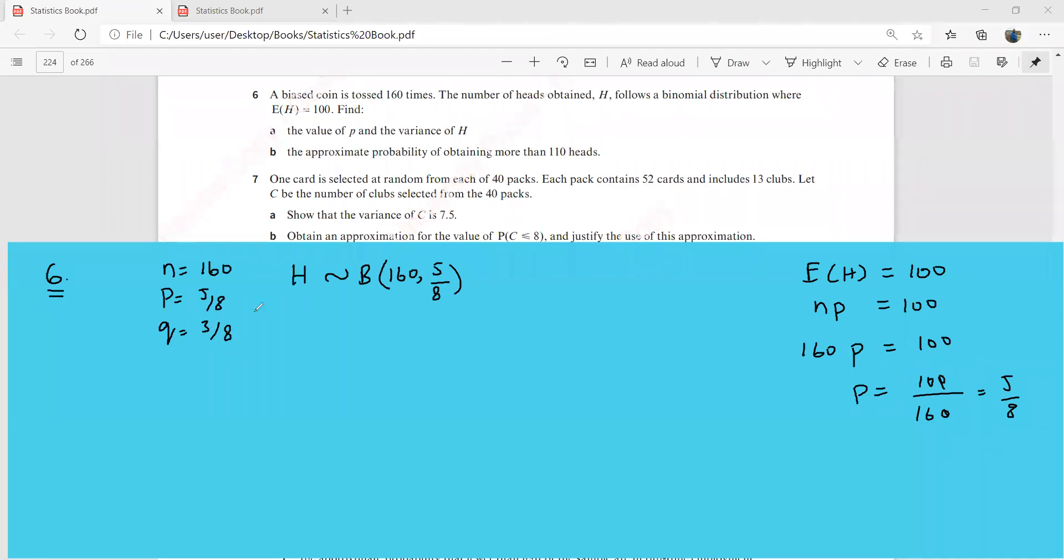It says find the approximate probability of obtaining more than 110 heads. So it's asking to find this probability that h is more than 110. Now you have to be very careful while writing this. You have to make sure that if there is an equal mark or not. Since it says more than 110, I'm just going to write more than 110. So we have to find this probability that h is more than 110.